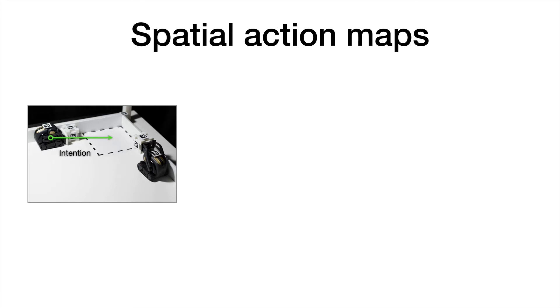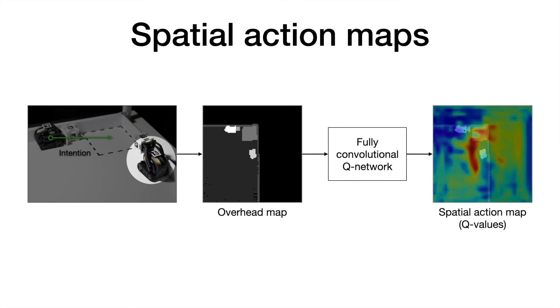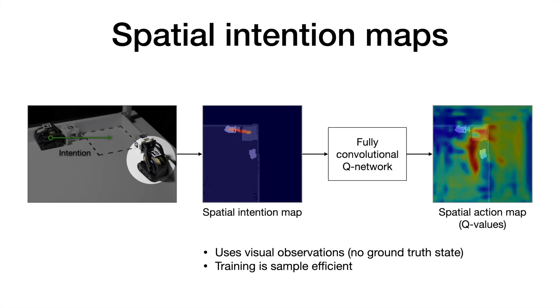Our idea builds upon the spatial action maps framework, in which a fully convolutional Q network is trained to map visual observations to a Q value map. The dense action space is spatially aligned with visual observations. This spatial alignment enables highly sample-efficient training of reinforcement learning agents. In this work, we follow the same insight and spatially encode intentions in the same domain as the observations. This means that action predictions and encoded intentions are both spatially anchored on visual features of the scene.